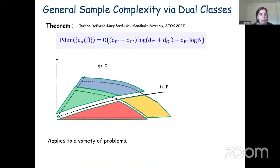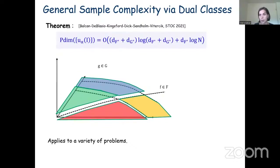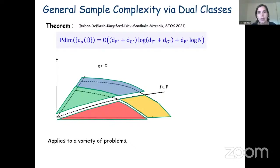The exciting fact is that this result then applies to a variety of data-driven algorithm design problems. Once we get this sample complexity result, we can use it to derive generalization and sample complexity guarantees for many data-driven algorithm design problems in the distributional learning formalization, including knapsack, clustering, solving integer programs via branch and bound, and so on.